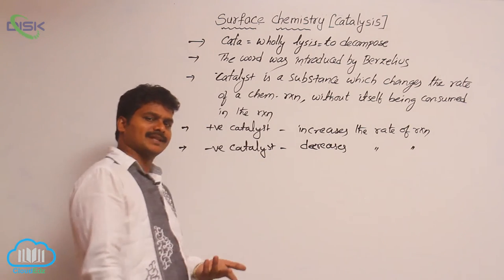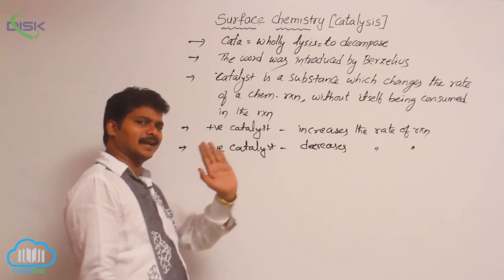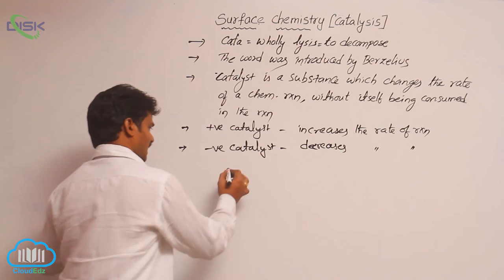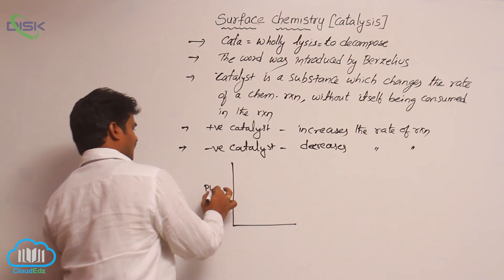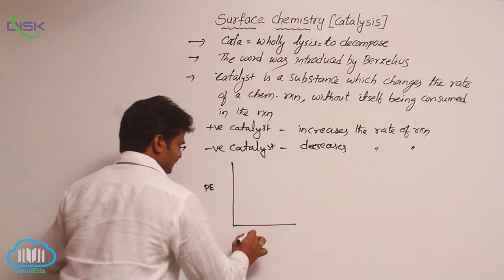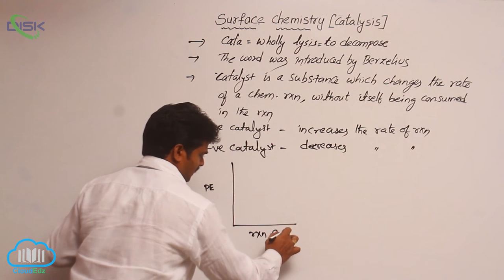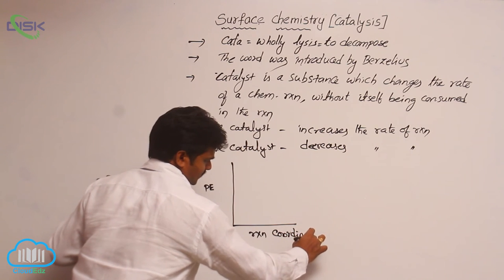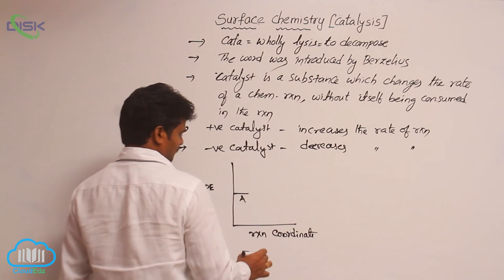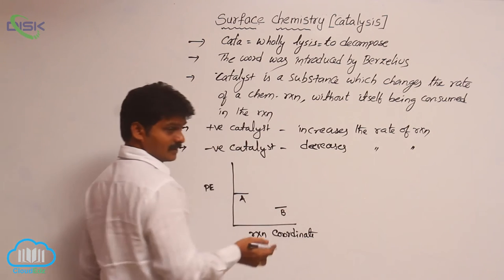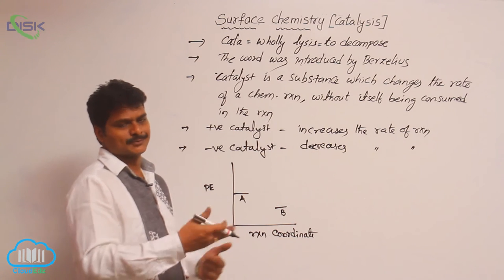We can explain the role of a catalyst using potential energy diagrams. Along the y-axis we take potential energy, and along the x-axis is the reaction coordinate, meaning the progress of the reaction. Suppose A is the reactant and B is the product.